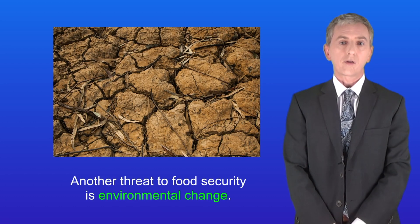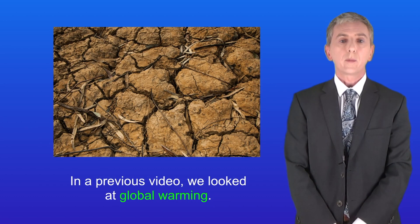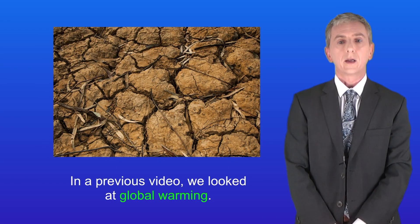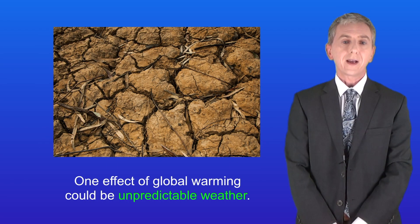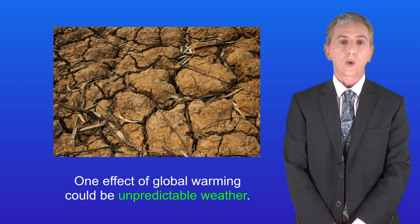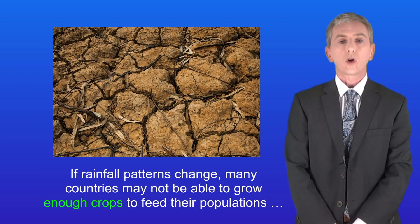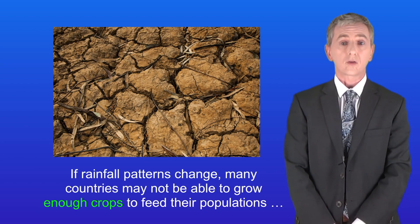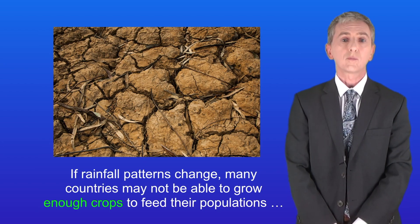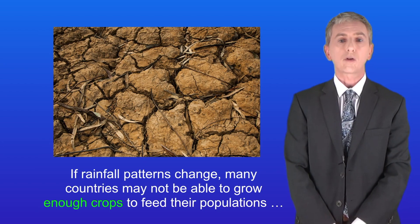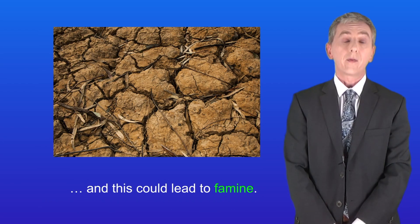Another threat to food security is environmental change. In a previous video we looked at global warming, and one effect of global warming could be unpredictable weather. If rainfall patterns change, then many countries may not be able to grow enough crops to feed their populations, and this could lead to famine.